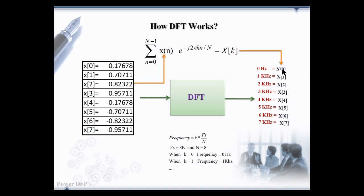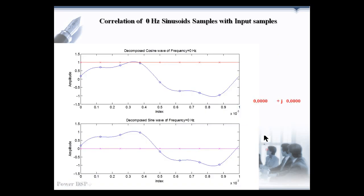When k is equal to 0, frequency is 0. When k is equal to 1, frequency is 1 kHz and so forth. Let us take the first case, that is index k is equal to 0, which is equal to the frequency component of 0 Hz, that is DC component.